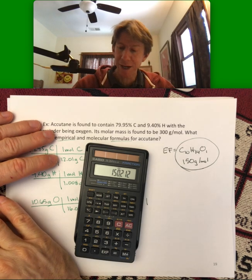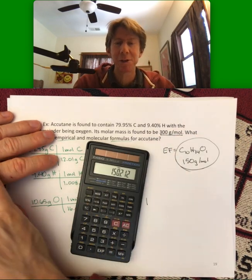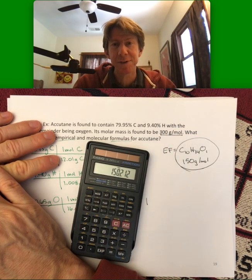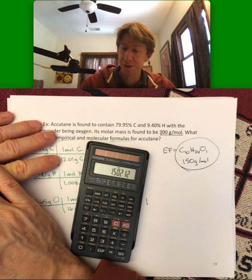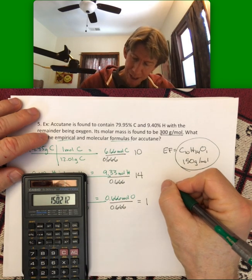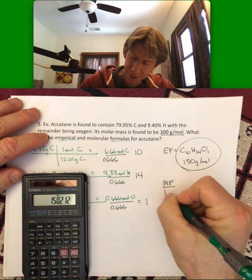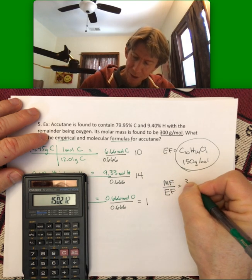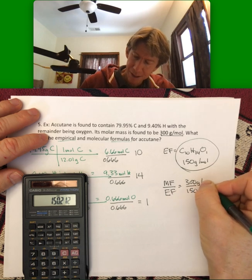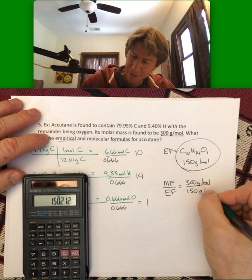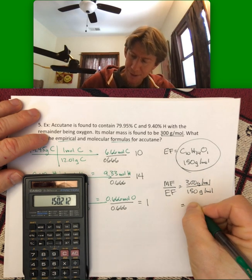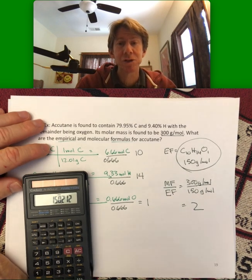My molar mass is given in the problem as 300, 300 to 150. Let's go ahead and do it anyway. So, MF over EF equals 300 divided by 150. Sorry, I have to write my units here. And that number is 2.